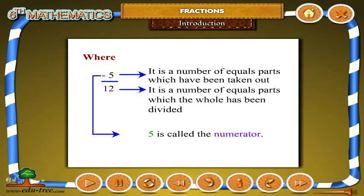Five is called the numerator. Twelve is called the denominator.